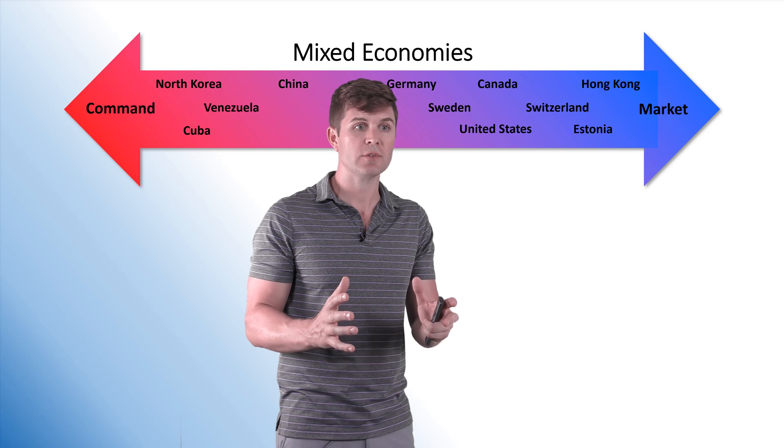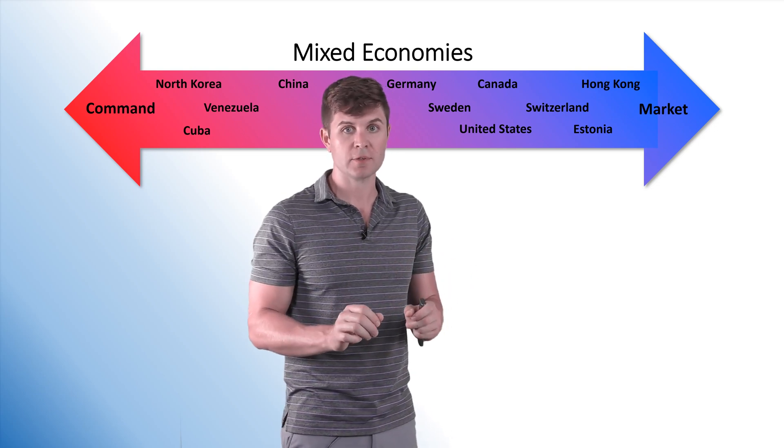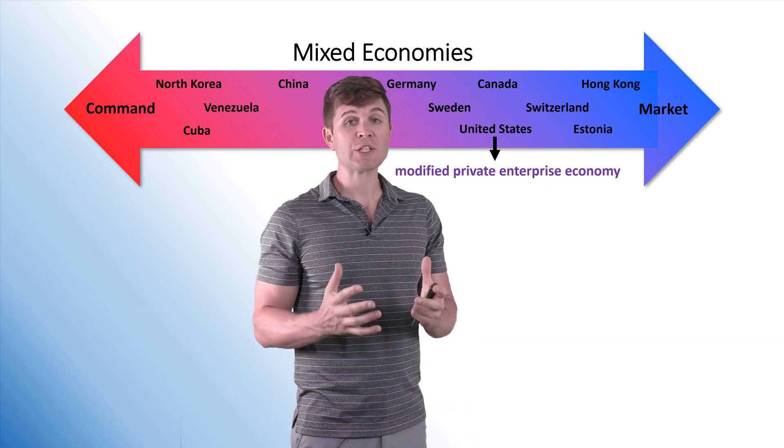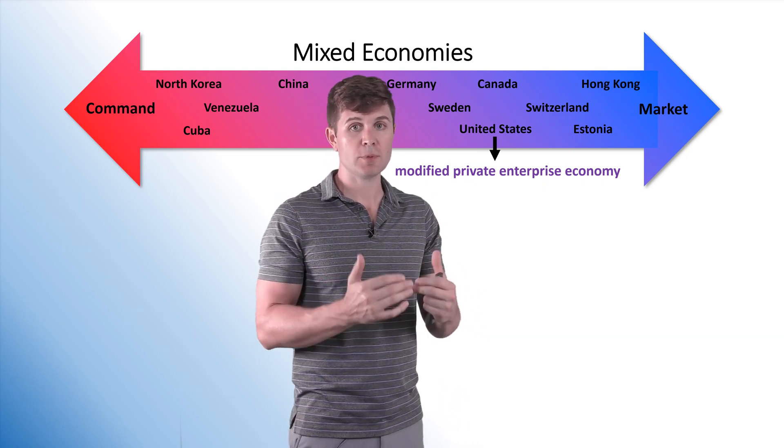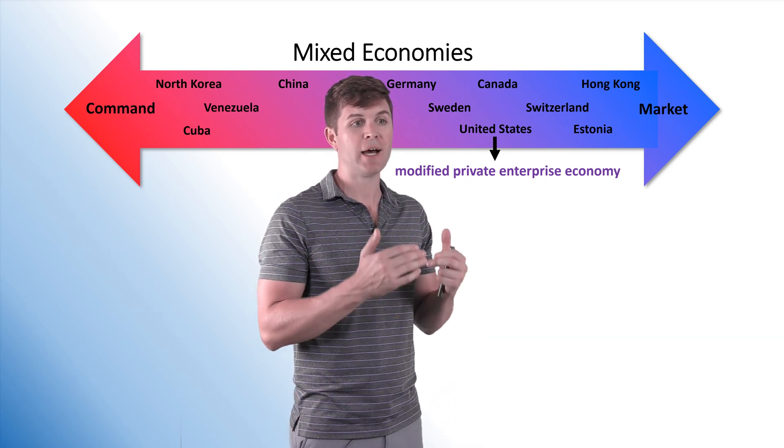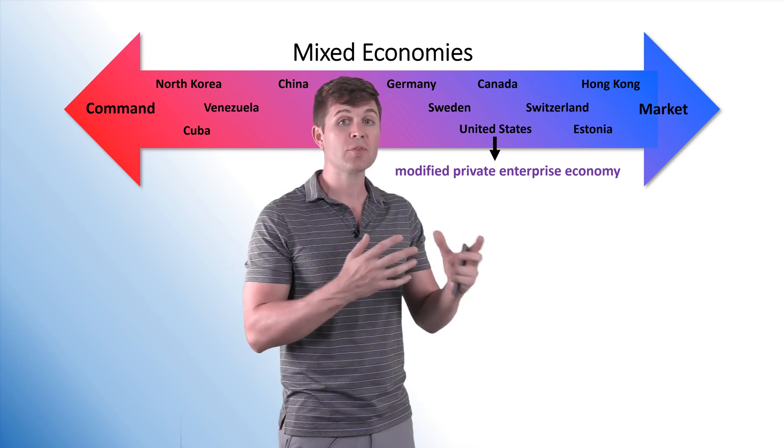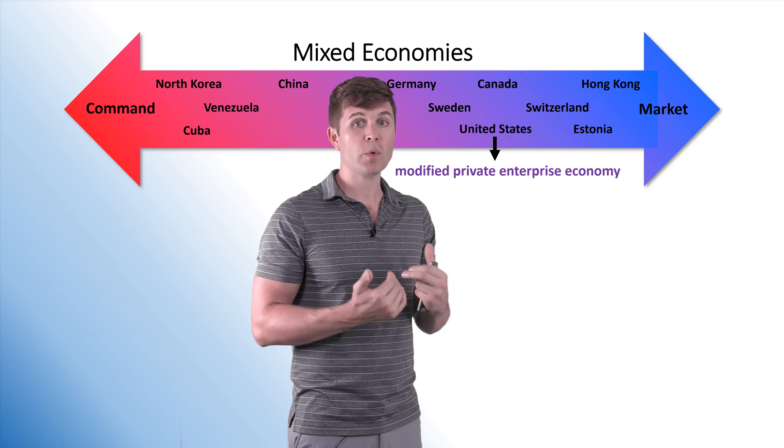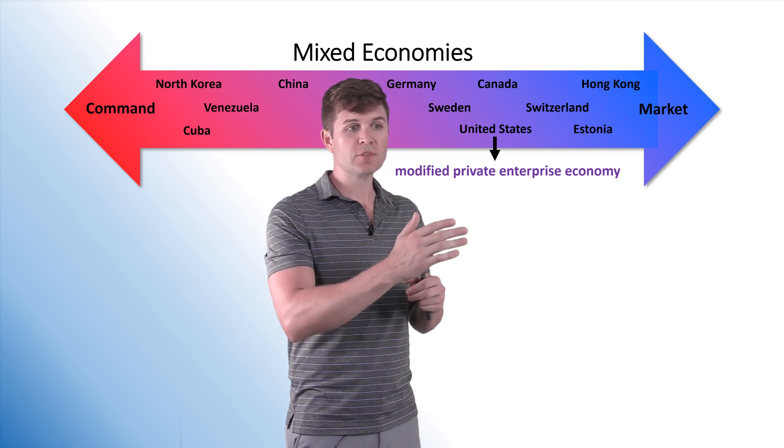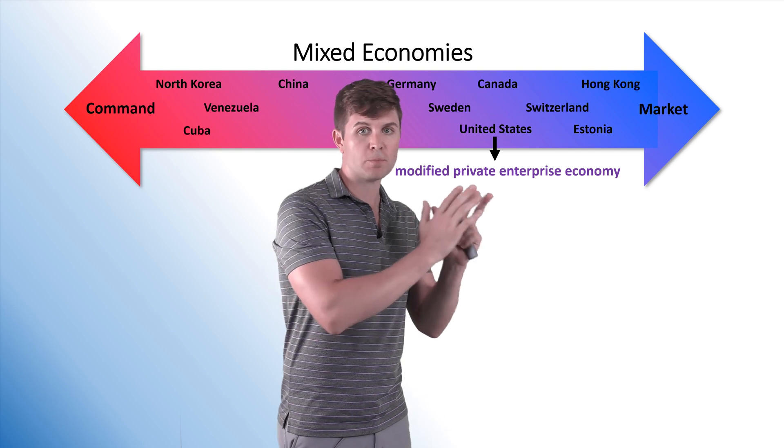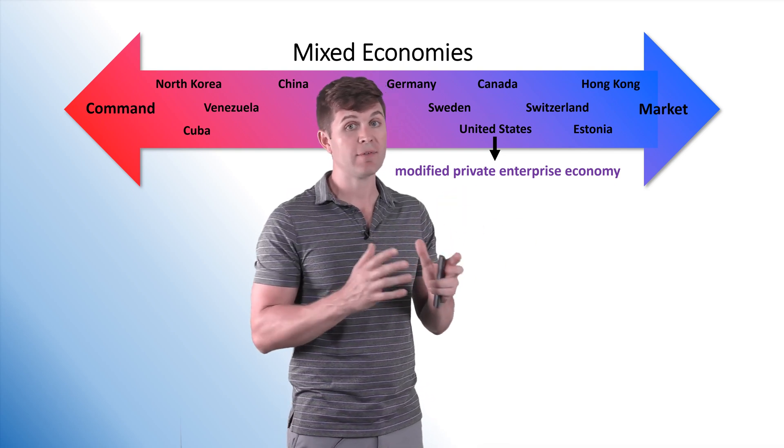All right. Now the United States, what we're actually considered in the best term to be used for us is what we call a modified private enterprise economy. We call ourselves capitalists. So there's a lot of different words to explain what we actually are, but mixed, modified, whatever it might be, we're a little more leaning towards market than we are command, but we have aspects of both.